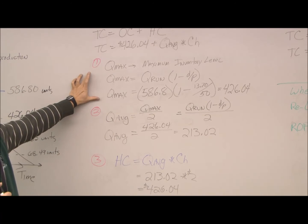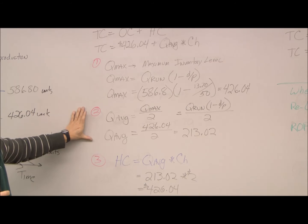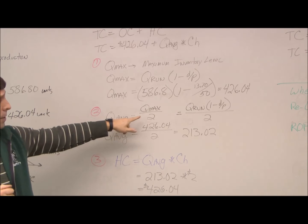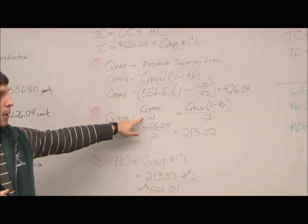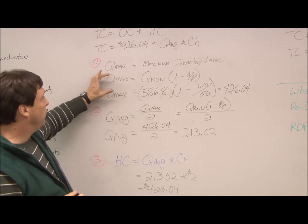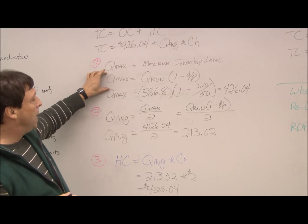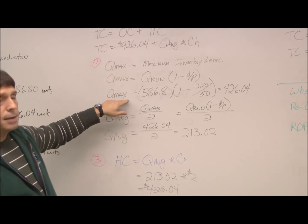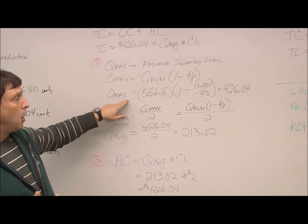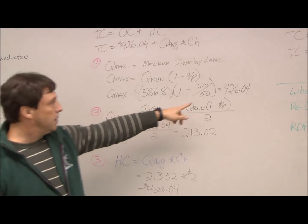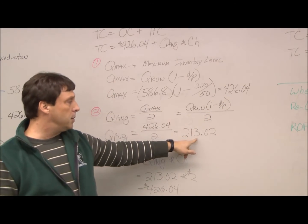Once we know our maximum amount of inventory, our pesky accountants always want to know our average inventory amount so they can calculate all the costs we need for a balance sheet there. So Q average is simply our max divided by 2. Simple average. A lot of times, including our book, you'll see it written this way. We're taking the Q max formula and actually putting it in the equation. You can do either way. They're equivalent. I find I like doing this because you need to find the max inventory anyway for most problems. So it's easier doing it in two steps. So our Q average is simply our 426 divided by 2, which is 213.